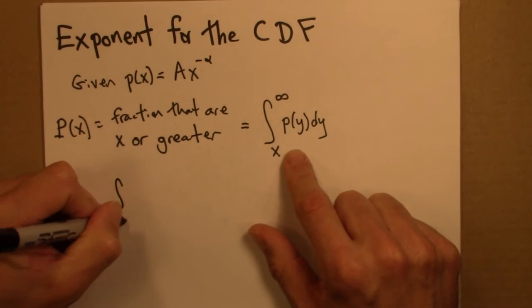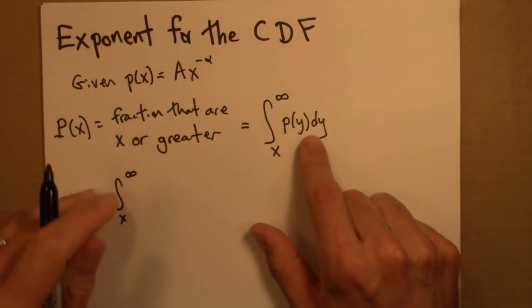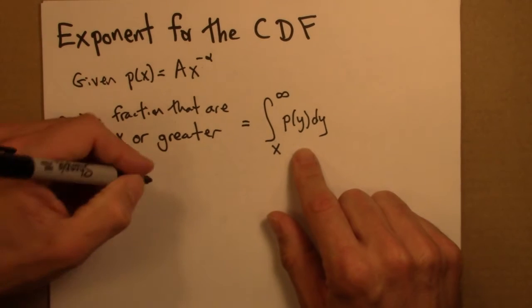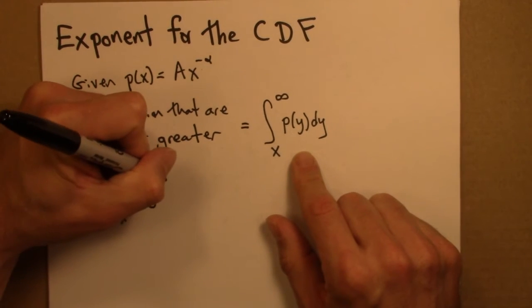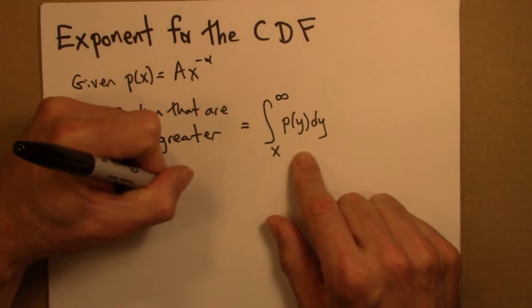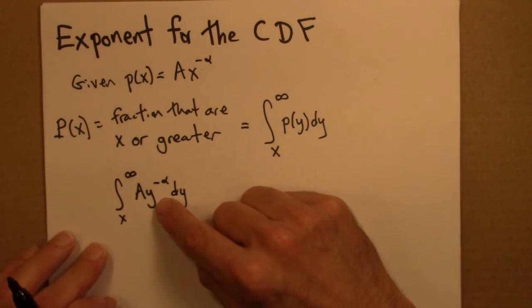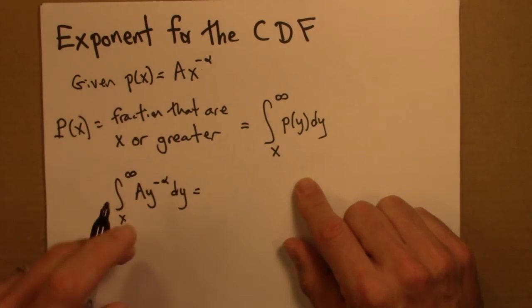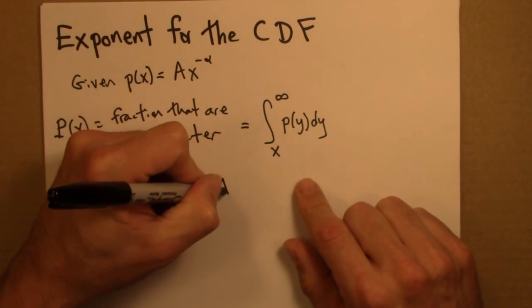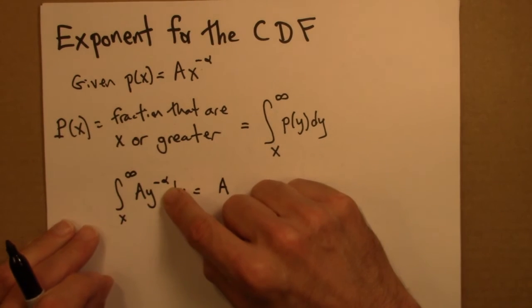So I'm going to go from x to infinity, and I'm going to plug in the distribution function. So this is Ay to the minus alpha dy. This is a relatively straightforward integral to do. We just need to be careful with minus signs. So A is a constant, it stays put. And this is the power rule backwards.